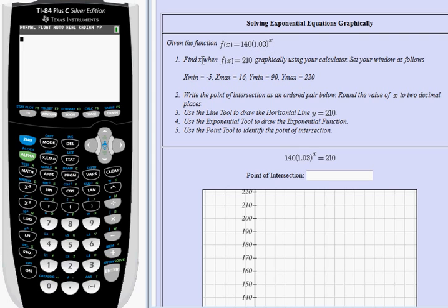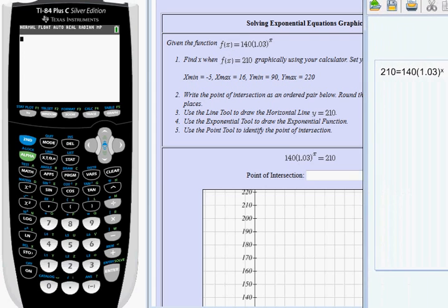We're supposed to find the input x that gives us an output f of x of 210. Since f of x is equal to 210, you could replace the notation f of x with the number 210 and you'd get an equation that looks like this: 210 equals 140 times 1.03 to the x.